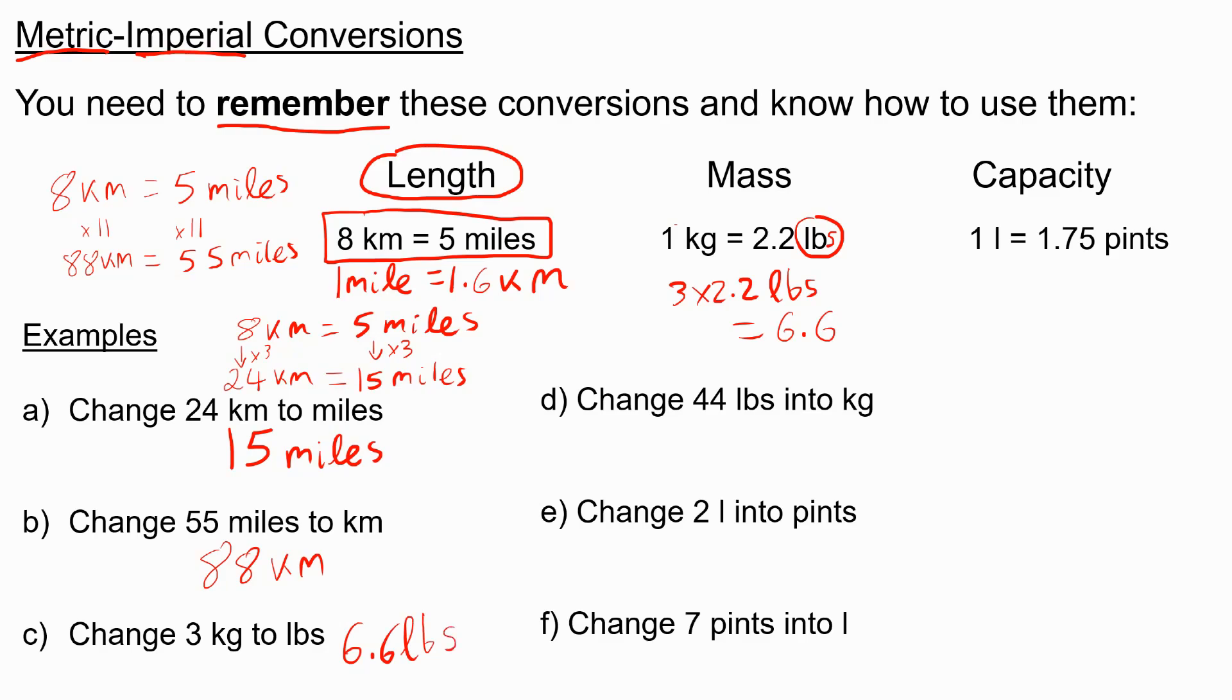On the other hand, if I want to change pounds back to kilograms, to get from 2.2 to 1, I would need to divide by 2.2. So what I have to do to go from pounds back to kilograms is divide by 2.2, and kilograms to pounds, you would times by 2.2. So I would need to do 44 divided by 2.2.